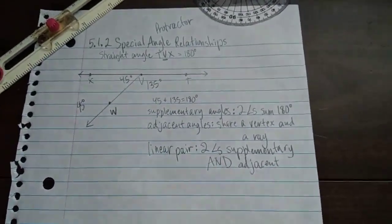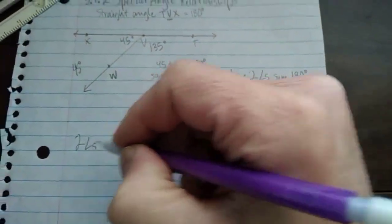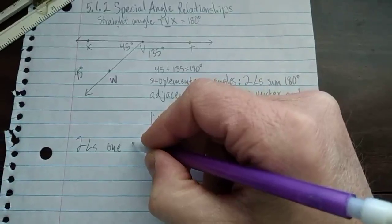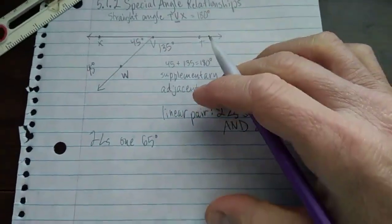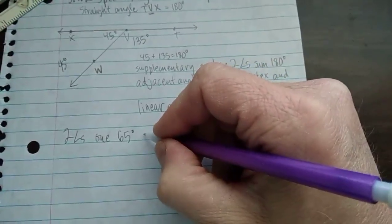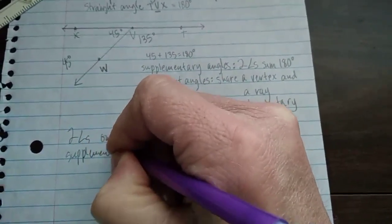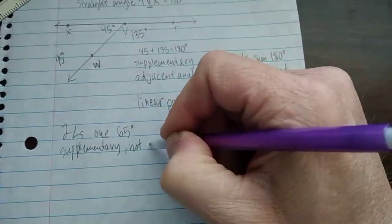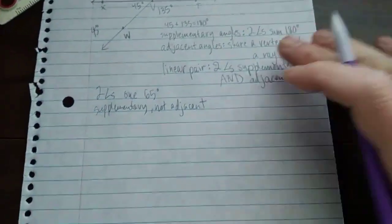Now, I'm going to give you a little challenge here. I want you to draw two angles. One of them is 65 degrees, and they have to be supplementary and not touching. Supplementary and not adjacent. Pause the video and draw it, and then see if yours matches mine.